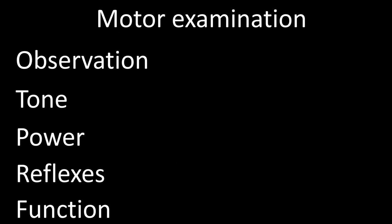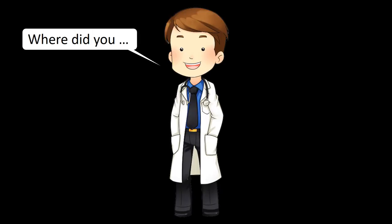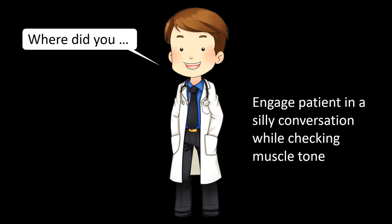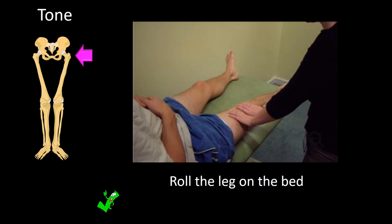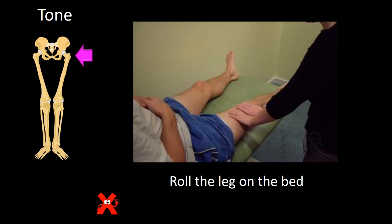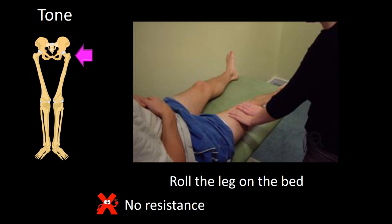Now we go back to the general order of motor examination. After observation, we move to tone evaluation. The best way to examine tone is while having a casual conversation with the patient. To start, check hip tone: hold the knee and roll the leg on the bed. It is normal if you feel minimal resistance, and abnormal if you feel significant resistance — indicating increased tone — or no resistance, indicating flaccidity.